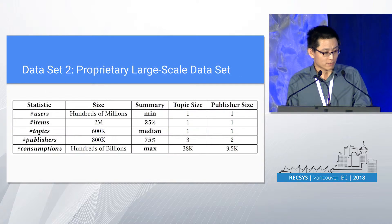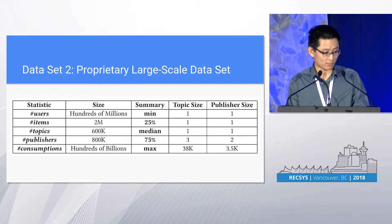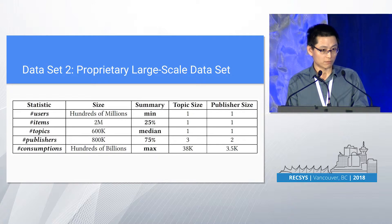Another dataset — this is a proprietary large-scale dataset. These are the statistics you see here. Two attributes are involved: topic and publisher. Similarly, it shows the same distribution for the group size — highly unbalanced, highly skewed.